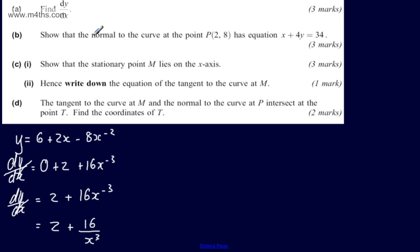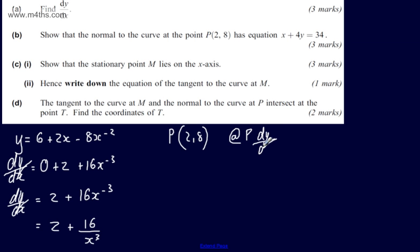In part B, again for three marks, we're asked to show that the normal to the curve at point P(2, 8) has equation x + 4y = 34. A normal is a straight line, so we need a point and a gradient. Using point P(2, 8) in the gradient function gives us the gradient of the tangent at P: dy/dx = 2 + 16 over 2³ = 2 + 2 = 4. So M1, the gradient of the tangent, equals 4.